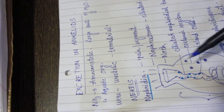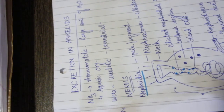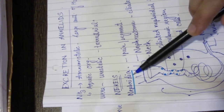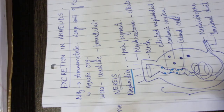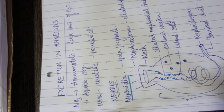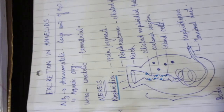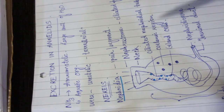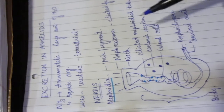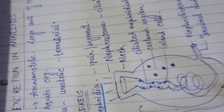First of all, we will start with excretion in Nereis. In annelids, the excretory organ is nephridia. We will discuss it in Nereis, earthworm, and leech. It is very simple — just remember the overview. Nephridia occur as one pair per segment, so in every segment you will get a pair of nephridia. Through this, you can understand the entire excretory system.